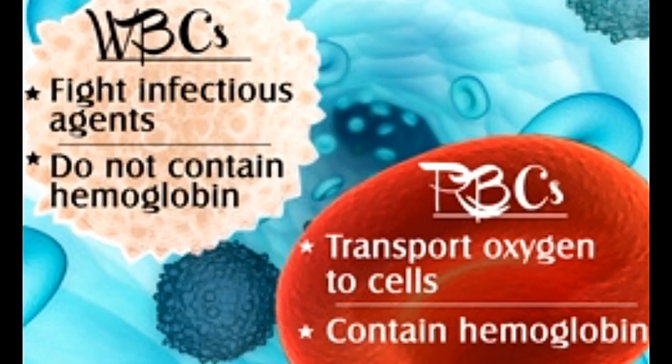Plasma accounts for about 55% to 60% of human blood, while blood cells form about 40% to 45% of total blood volume. There are basically three types of blood cells: white blood cells (WBCs), red blood cells (RBCs), and platelets. All these cells play an important role in various functions of the body, though they differ greatly in their structure and composition. Here we discuss the differences between RBCs and WBCs.